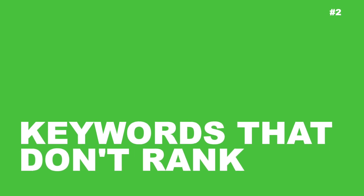Number two: keywords that don't rank. Sometimes a KGR term just doesn't rank well, even if all the metrics told you that it should work. Google is really good at knowing what the searcher is interested in — it's called searcher intent. Before targeting a KGR compliant term, you should Google the term and see what results show up, look at the sites, and see what kind of sites they are. You'll see what Google is delivering to the searcher, and that is usually really well aligned with the searcher intent.